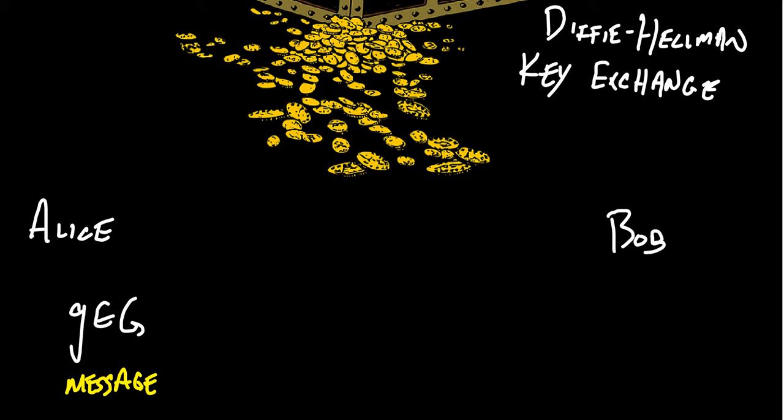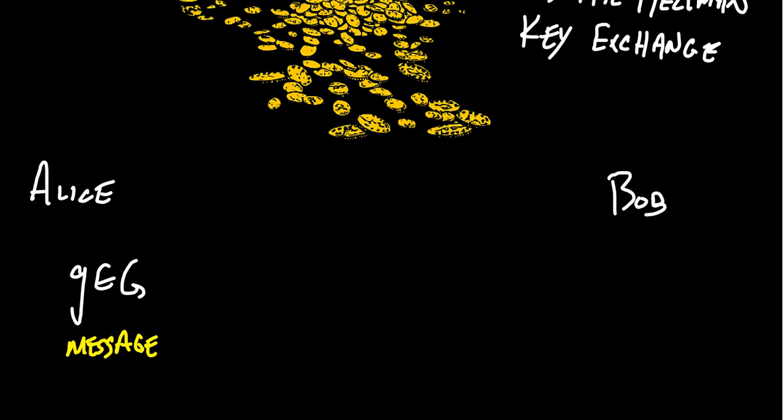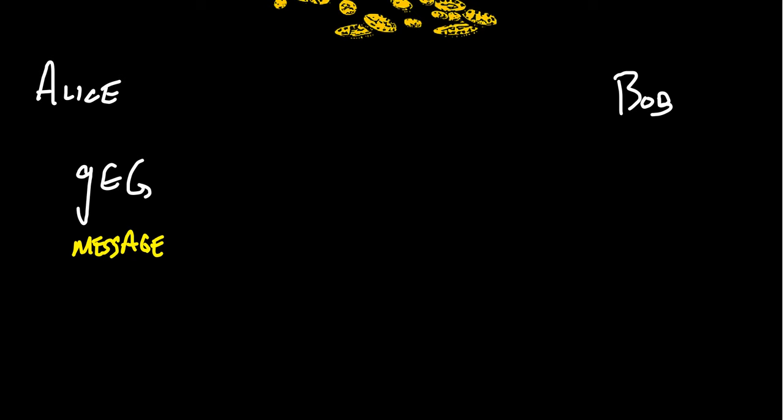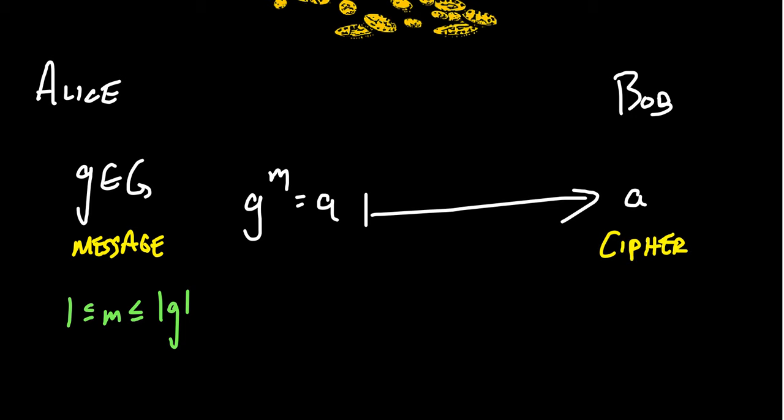So imagine Alice wants to exchange the secret element g with Bob. Maybe this element g in the group is valuable. This is the secret, the message that Alice wants to send to Bob. But she can't just say g because then everyone will know what her secret message is. So what Alice is going to do secretly is she's going to pick some number m between the order of g and the number 1. And then she is going to compute the element g to the m. And we're going to call this a. This is then what she transmits to Bob.